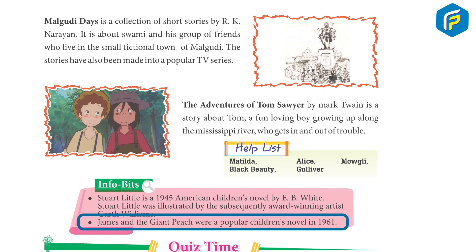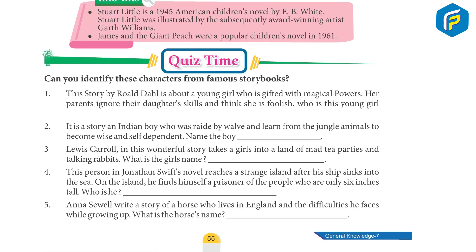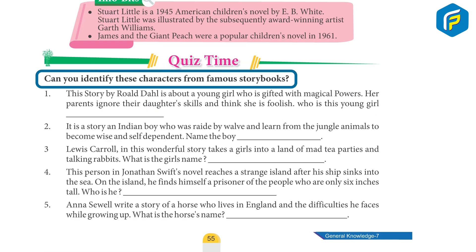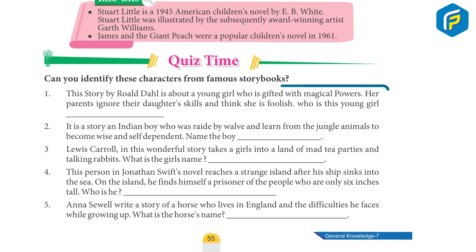James and the Giant Peach was a popular children's novel published in 1961. Quest time! Can you identify these characters from famous storybooks?